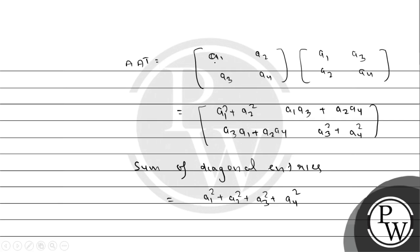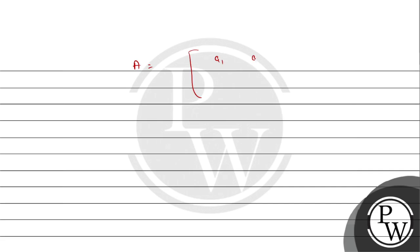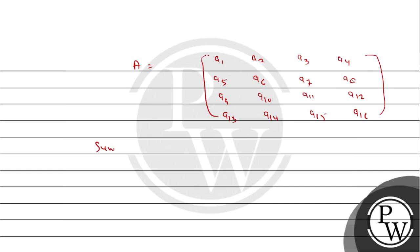For the 4×4 matrix, we label elements A1 through A16. The sum of the diagonal entries of AA^T becomes A1² + A2² + A3² + A4² + A5² + A6² + A7² + A8² + A9² + A10² + A11² + A12² + A13² + A14² + A15² + A16². So the sum equals the sum of squares of all 16 entries.